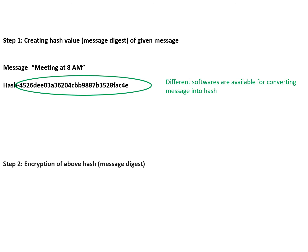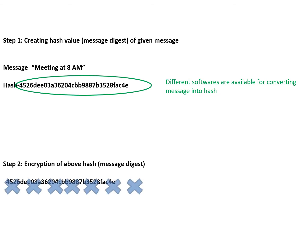Step 2: you take this hash that is arrived from the above message with the use of any software, and then encrypt this message. Encryption is the process of making a particular thing unreadable. So first you create the hash and then make it unreadable. In simple form, this is the digital signature.